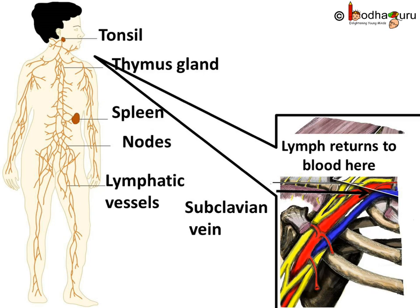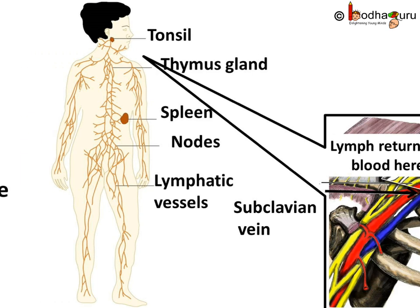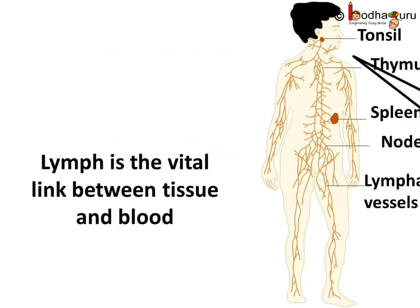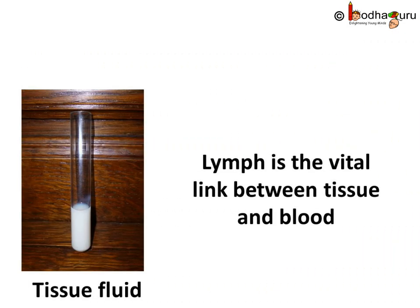The lymph is ultimately emptied into the right or left subclavian vein, where it mixes back with the blood. So we see, the lymph is the vital link between the tissue and the blood. When skeletal muscle contracts, it applies pressure on the lymphatic vessel, causing the lymph to flow.